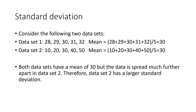Consider the following two data sets. Data set 1 is 28, 29, 30, 31, and 32, with a mean of 30. Data set 2 is 10, 20, 30, 14, and 50, and the mean is also 30. Although both data sets have a mean of 30, the data is spread much further apart in data set 2. Therefore, data set 2 has a larger standard deviation.